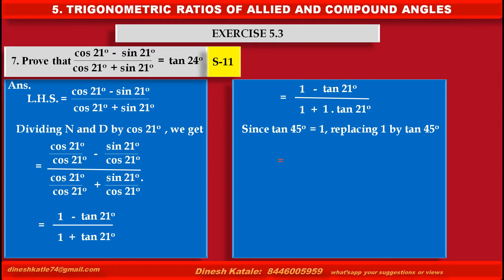We get: the first term of the numerator becomes tan45 minus tan21 as it is, upon at the denominator keeping first term as it is 1 plus, in the second term of the denominator replacing 1 by tan45 into tan21.